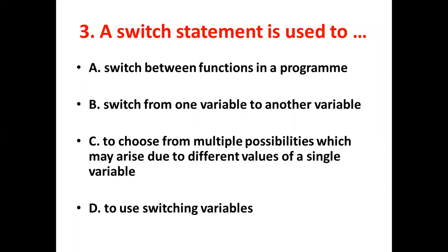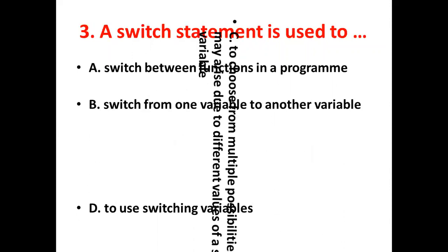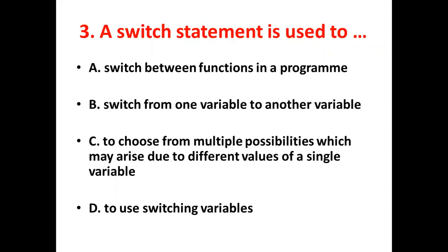Third bit. A switch statement is used to dash. Option A: Switch between functions in a program. Option B: Switch from one variable to another variable. Option C: To choose from multiple possibilities which may arise due to different values of a single variable. Option D: To use switching variables. Answer: Option C, to choose from multiple possibilities which may arise due to different values of a single variable.